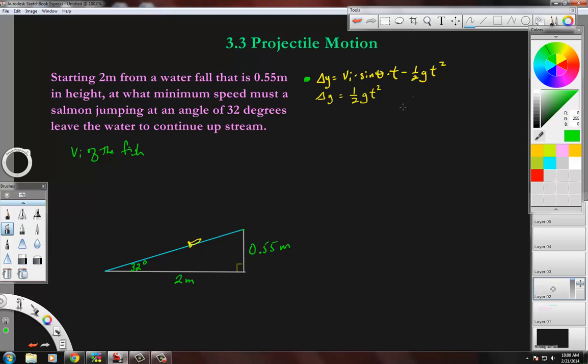So if we use this equation here first, delta Y equals one half GT squared. So 0.55 equals one half 9.81 T squared. So what we're going to do here, we have everything but T squared. So we're going to solve for T. We'll do half of 9.81, which is 4.905, of T squared. And this is 0.55. So we'll divide by 4.905.